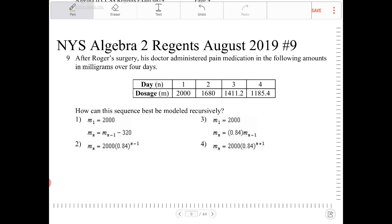I can also see that the dosage is not decreasing by some common difference. From 2000 down to 1680, we've decreased by 220, no, 320.